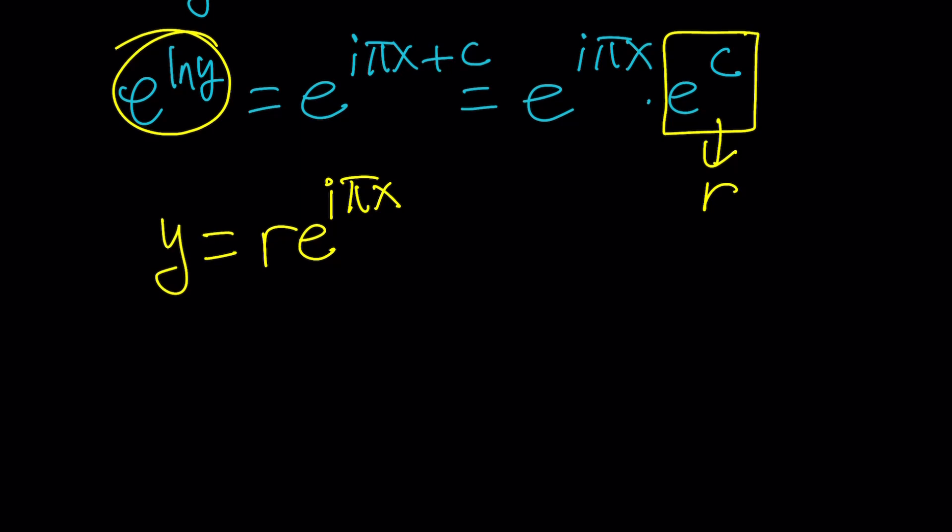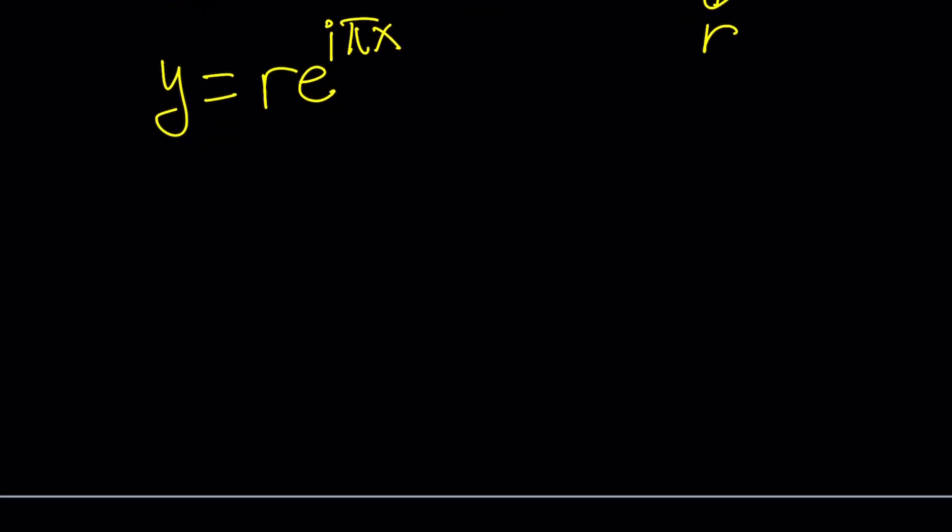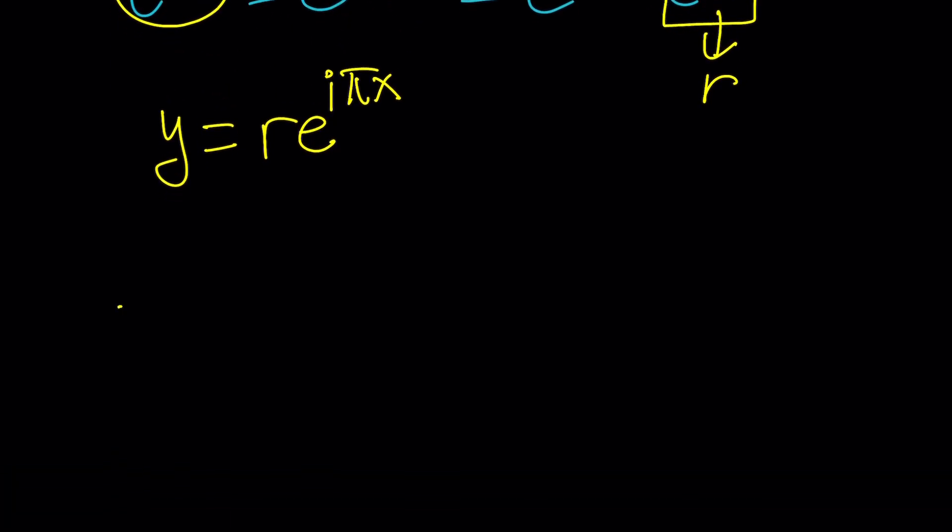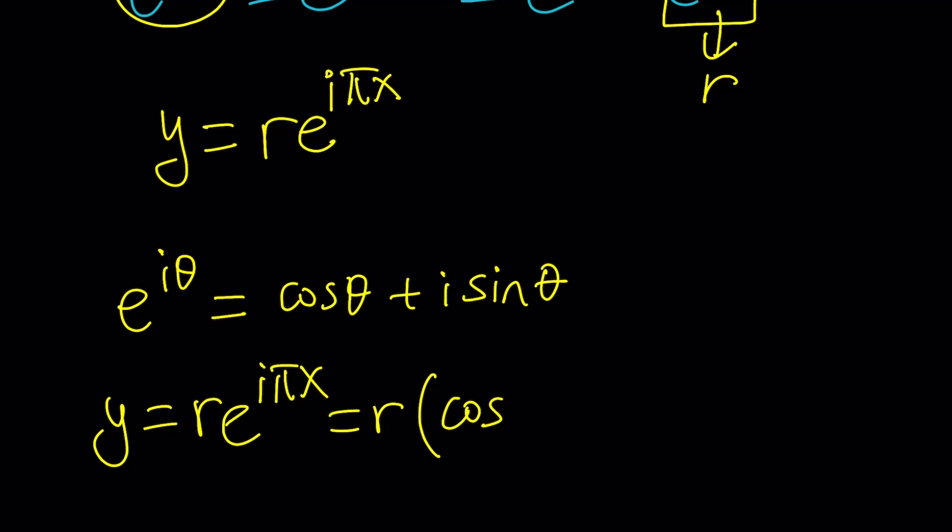Why? Because if you think about it, e^(iπx) using Euler's formula can be written differently. And what is Euler's formula? e^(iθ) = cos θ + i sin θ. So e^(iπx) from here can be written as follows. We can take the r out and then write this as cosine of πx plus i sine of πx.